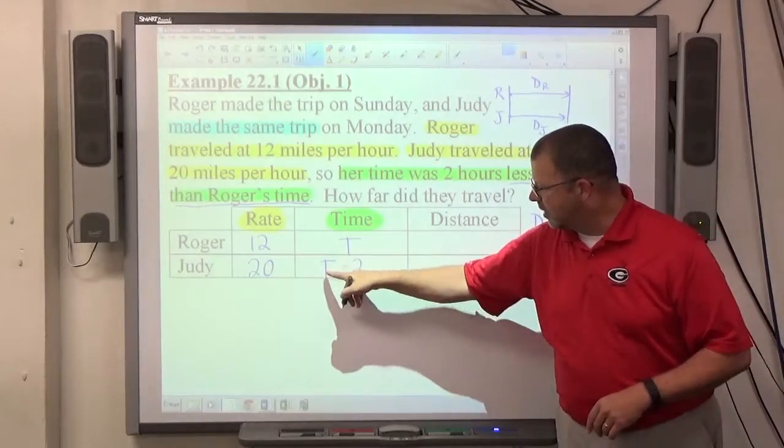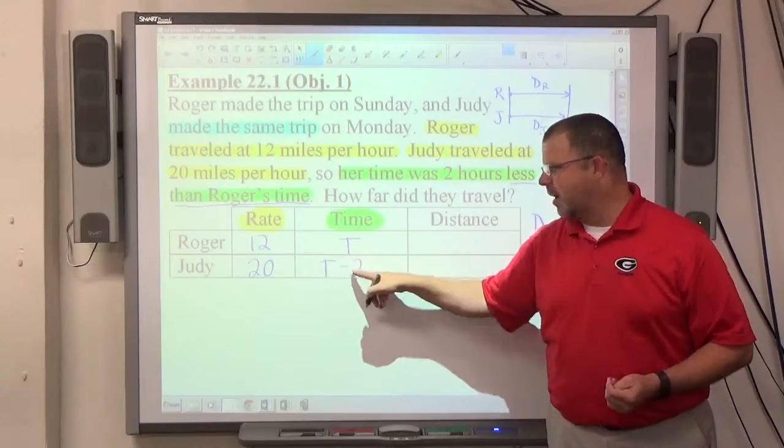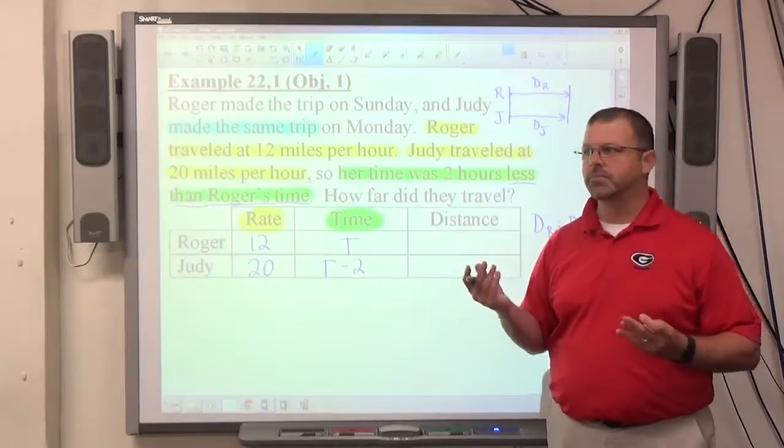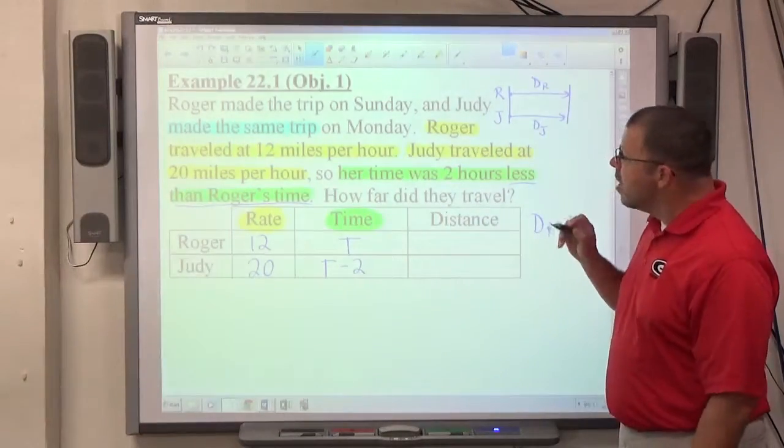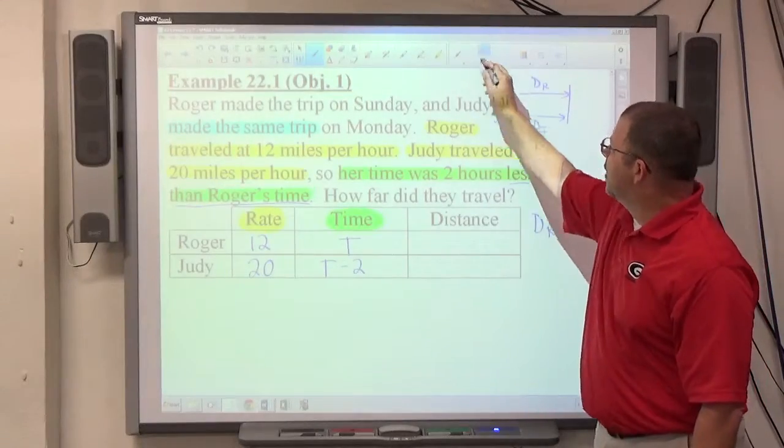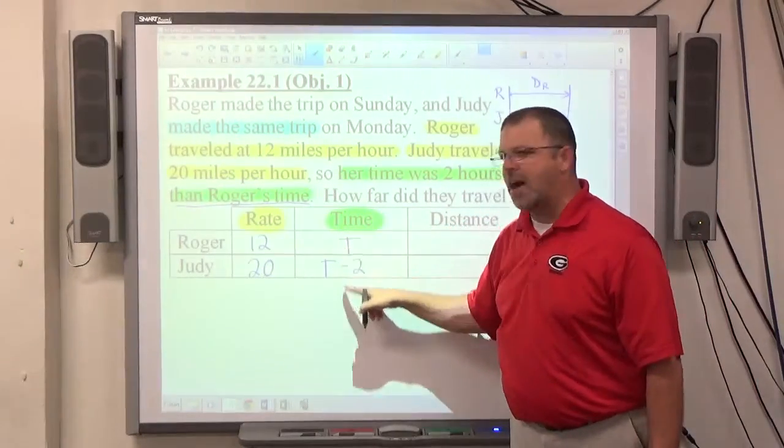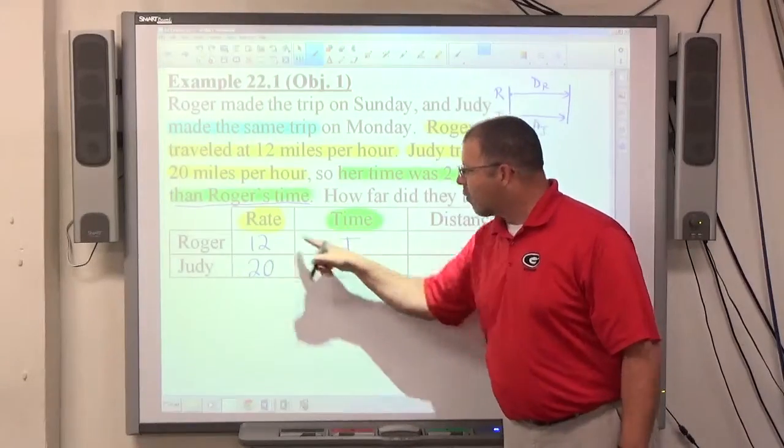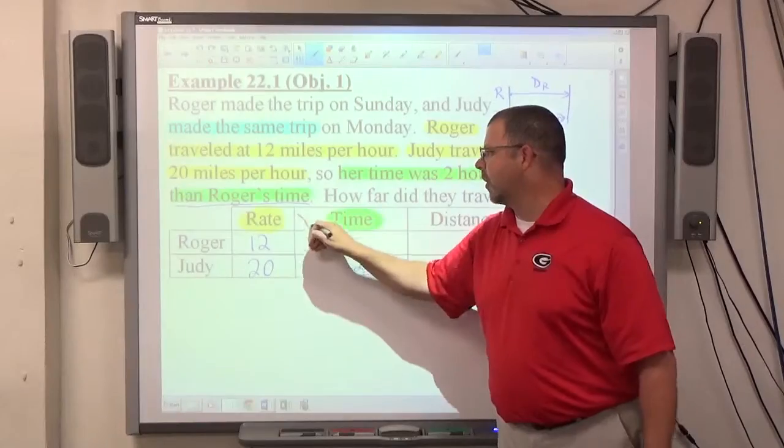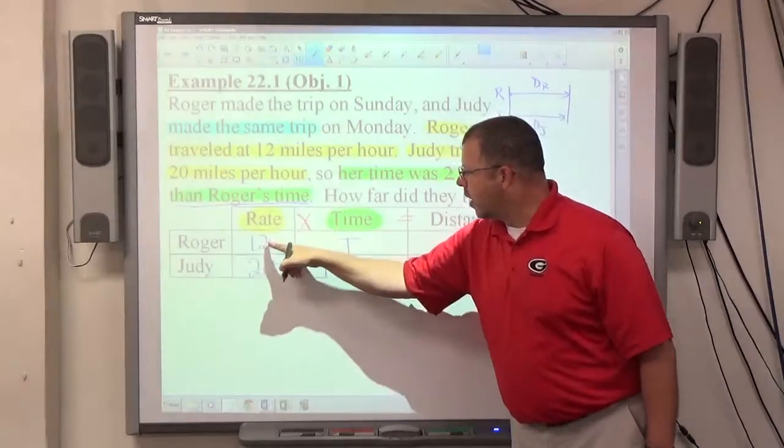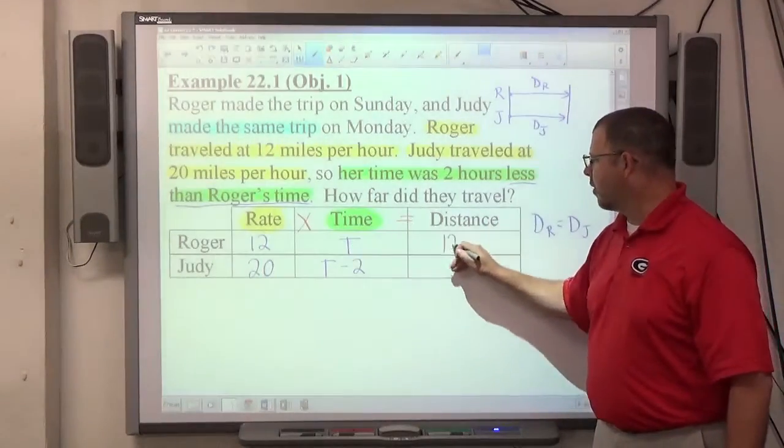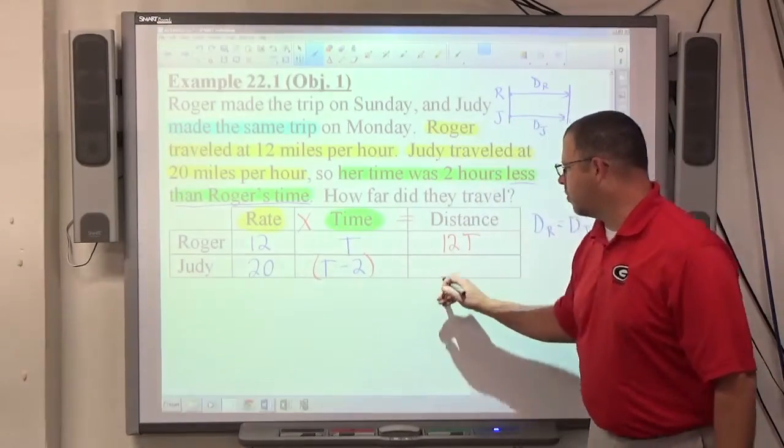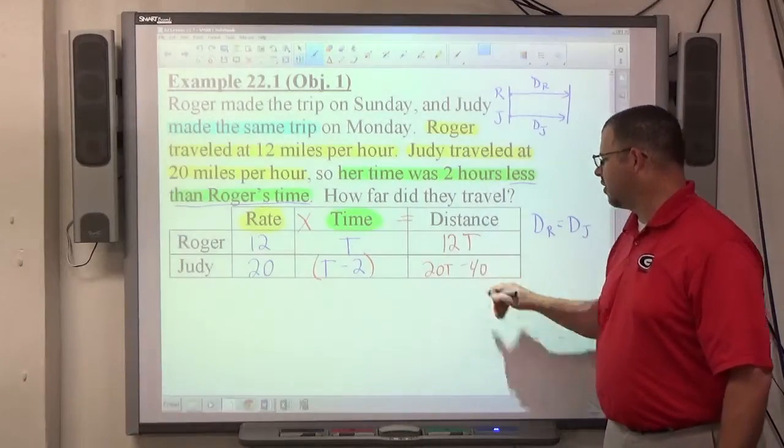Her time is two hours less than his time, so his time is eight. Eight minus two is six. Six is two less than eight. That's another way of determining which way to do it properly. Once I know the rates and the times, either with specific numbers or with algebraic expressions using the same variable, once I know all four of these pieces of information, rate times time equals distance is the relationship between these three quantities. So, 12 times t is equal to 12t for Roger's distance. 20 times the quantity t minus two makes 20t minus 40 for Judy's distance.